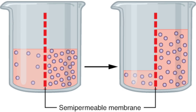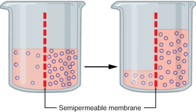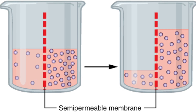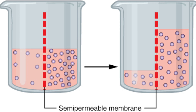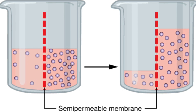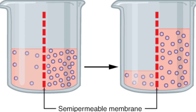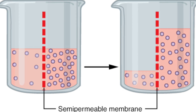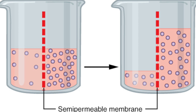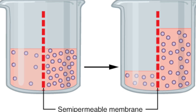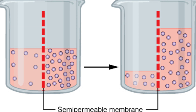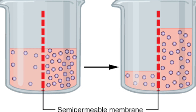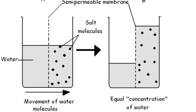In this video we are looking at osmosis. Osmosis is the movement of water molecules across a partially permeable membrane from a region of high water concentration to a region of low water concentration. A partially permeable membrane is a membrane with very small holes in it, which means that only small molecules can pass through. Water molecules can move in both directions.